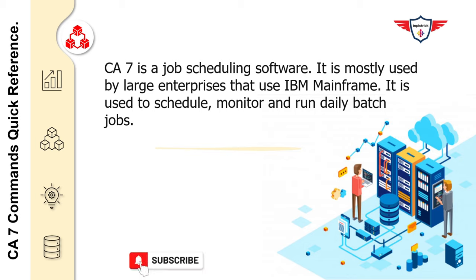CA7 is a job scheduling software. It is mostly used by large enterprises that use IBM mainframe as a computing platform. CA7 is generally used to schedule, monitor, and run daily batch jobs as per a predefined plan.